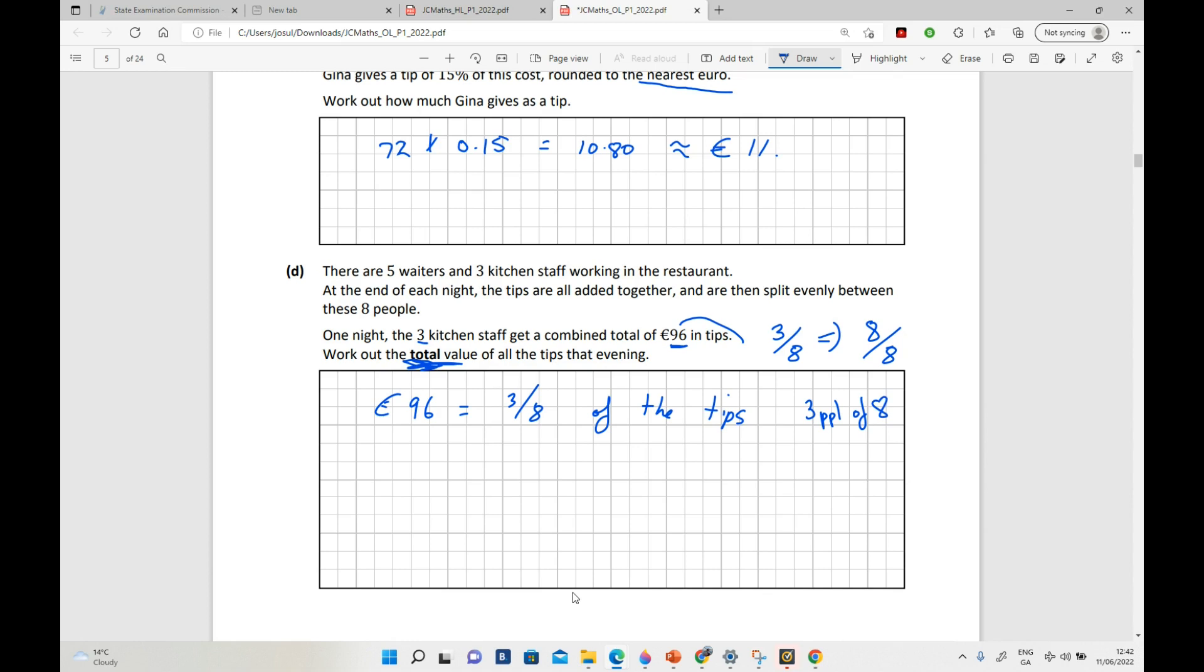So 96 divided by 3 is going to give me 32 euro per person within the eight. So each of them are going to get 32 euro.